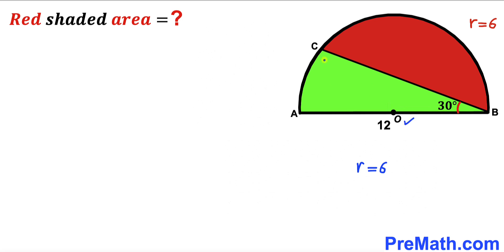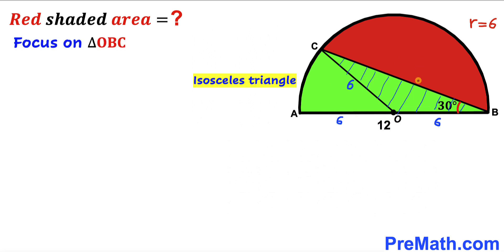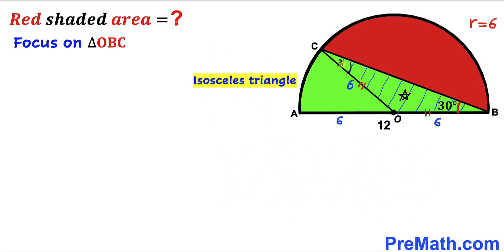I am going to connect center O with point C. Now OC is the radius of the semicircle, so OC = 6. Likewise, OB = 6 and OA = 6, since all are radii. Let's focus on triangle OBC. We can see this is an isosceles triangle since OC equals OB, so angle BCO is also 30 degrees.